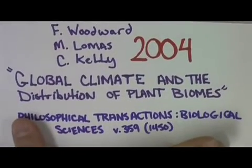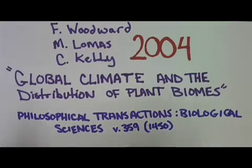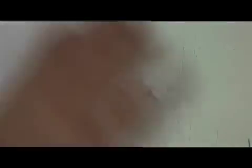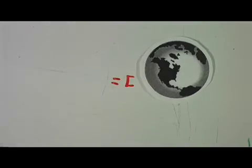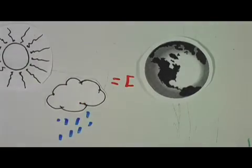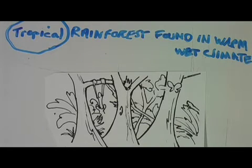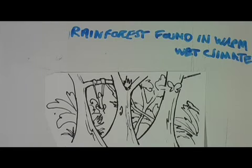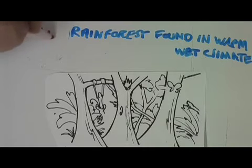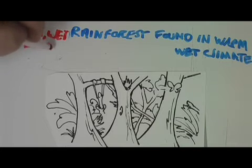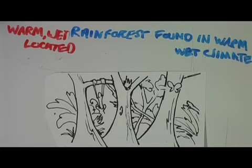An interesting side point made by the authors is that traditional definitions of biomes can include additional information that confuses the issue. Remember that biomes are types of plant or animal communities, but some definitions include geography or climate. Biome names that include 'tropical,' which is a specific latitude region on the globe, or 'boreal,' which means northern, are automatically telling you something about the climate of that region. So if you have 'tropical' in your name, it means you are located near the equator and will probably have a warm climate, because climate and latitude are linked. This can create a circular argument — if you said that tropical rainforests are located where they are because of the warm wet conditions present, you would in essence be saying warm wet climates are found in warm wet climates. Just something for you to think about.